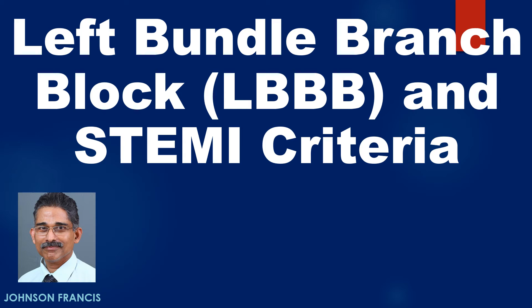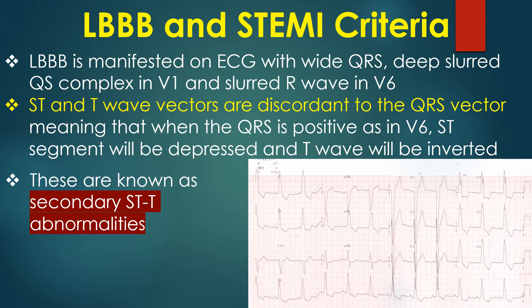Left bundle branch block is manifested on the ECG with wide QRS, deep slurred QS complex in V1, and slurred R wave in V6. ST segment and T wave vectors are discordant to the QRS vector, meaning that when the QRS is positive as in V6, the ST segment will be depressed and the T wave will be inverted. These are known as secondary STT abnormalities.